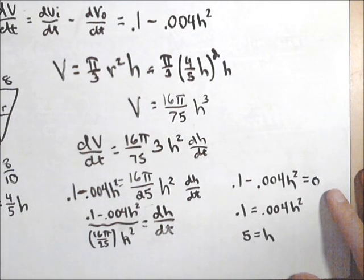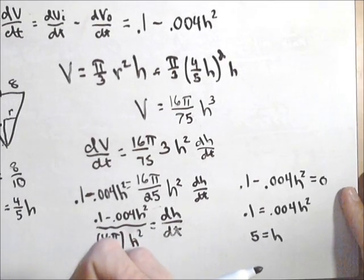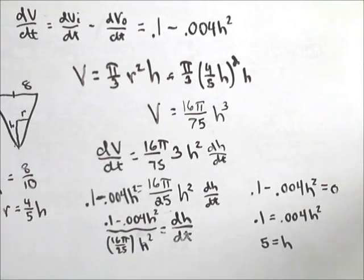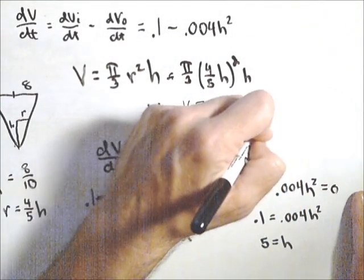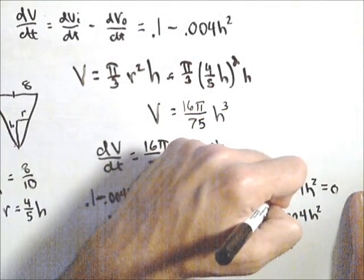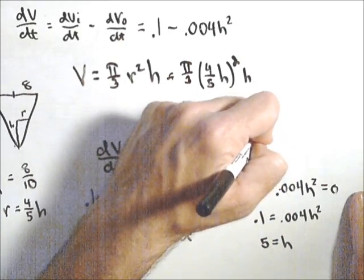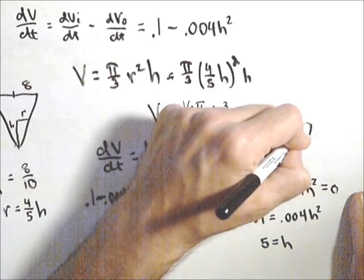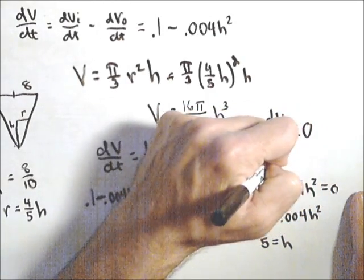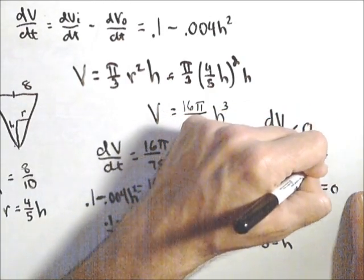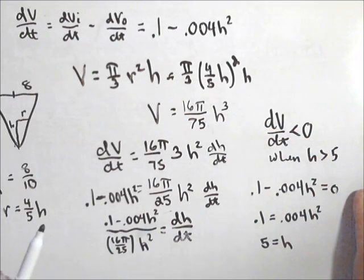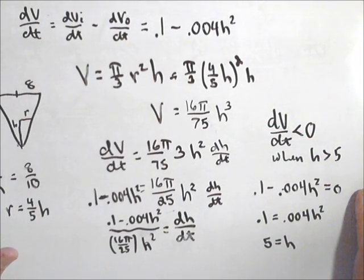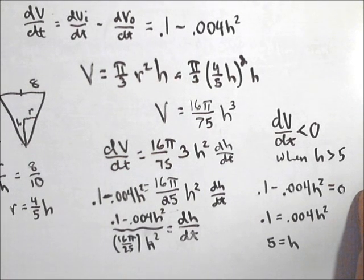So at 5 meters, dh/dt is zero, right when we're at the middle of the cone. Now if we analyze this a little bit, for this to be negative, dh/dt is negative when h is greater than 5. So that means the only time dh/dt is positive is when h is less than 5.